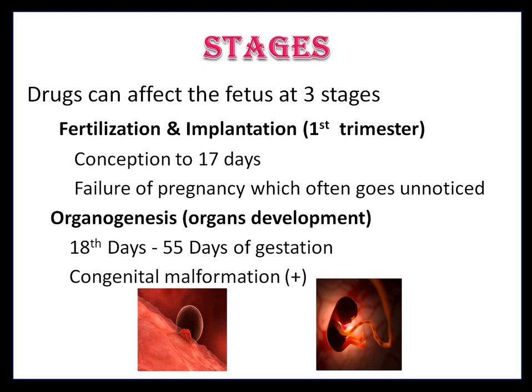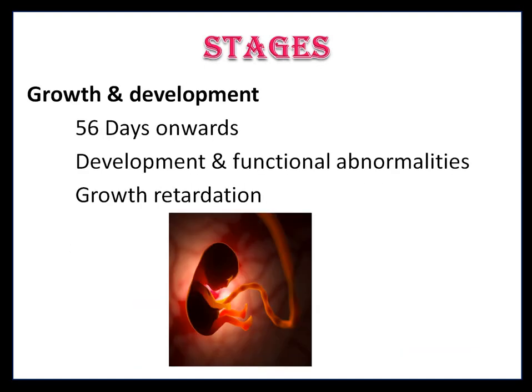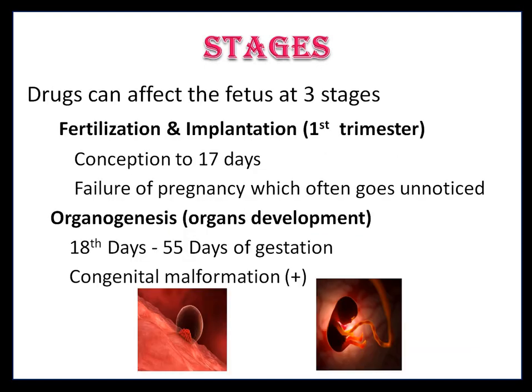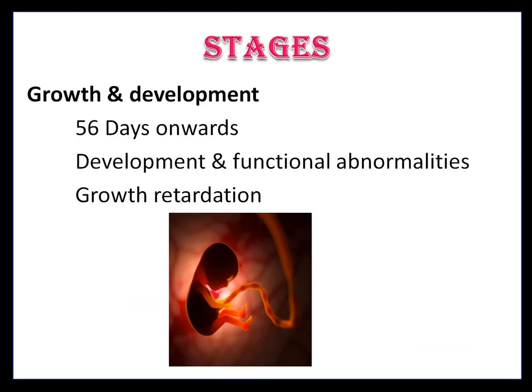The first stage is fertilization and implantation, that is the first trimester. The second is organogenesis, that is the organ development stage. The third is growth and development. Fertilization and implantation occurs from conception to the 17th day — pregnancy often goes unnoticed due to fertilization and implantation failure. Organogenesis is from the 18th day to the 55th day of gestation; congenital malformation is present at this stage.